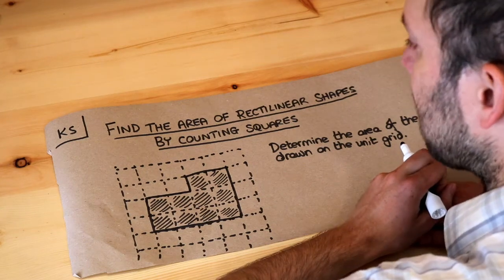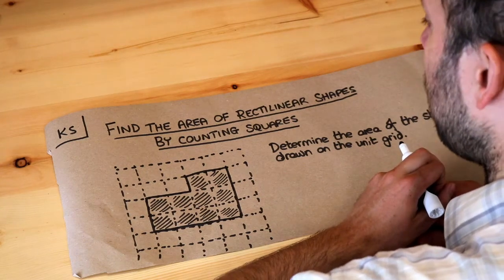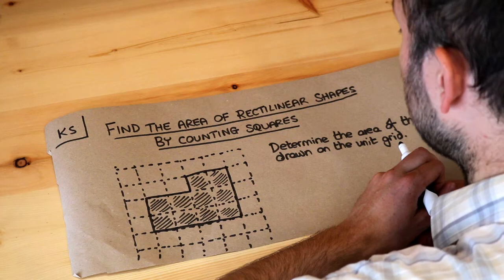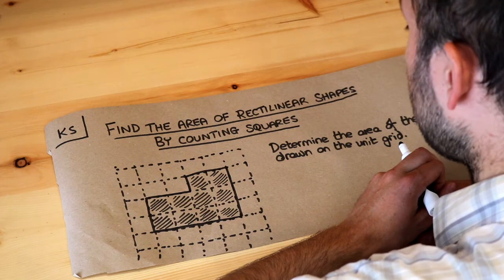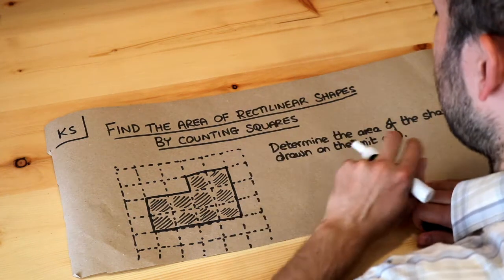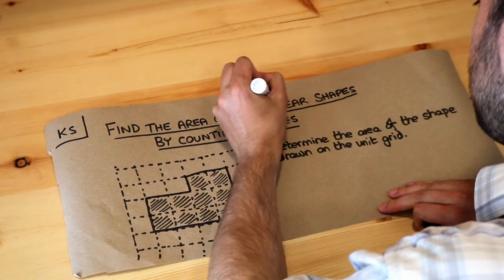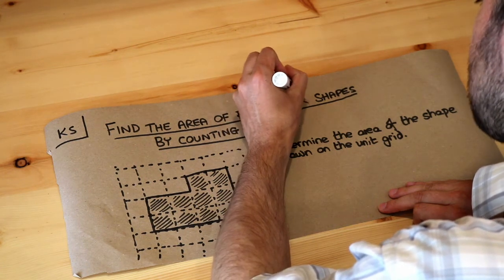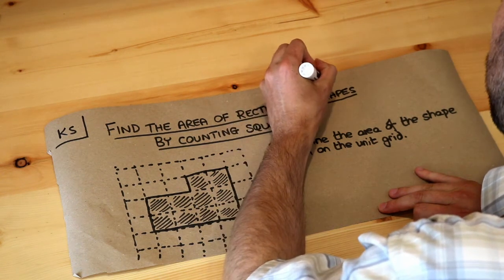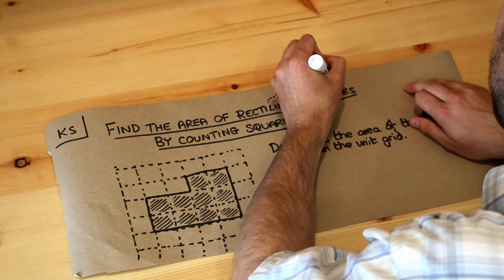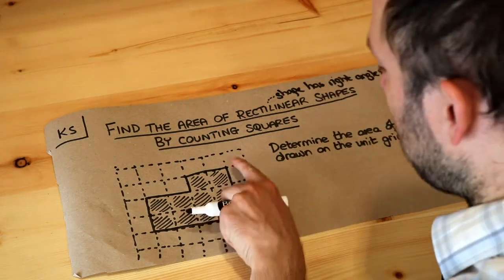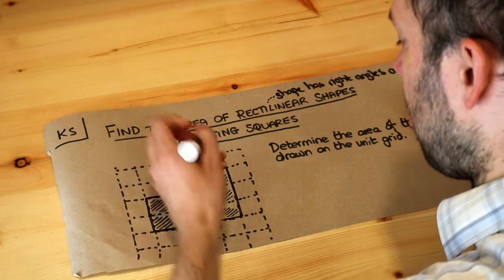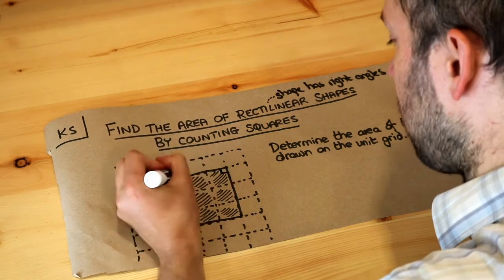Hello and welcome to Dr. Ross Math's key skill video on finding the area of rectilinear shapes by counting squares. This word 'rectilinear' just means the shape has right angles only — and a right angle is 90 degrees. So if you look at this shape, we can see we have hard corners and they're all 90 degrees.